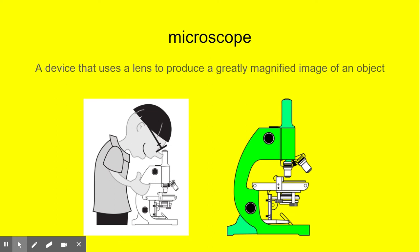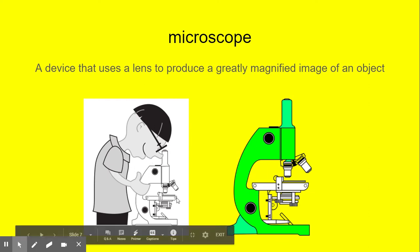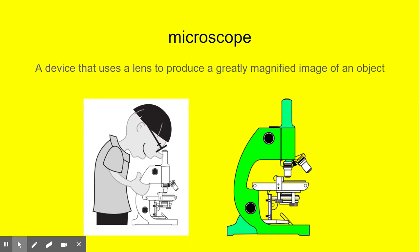Now we have a microscope. We've all seen a microscope. This boy is looking down into a microscope observing a slide. A microscope is a device that uses a lens to produce a greatly magnified image of an object. When we put a slide under a microscope, boys and girls, we're looking at it bigger, up close, magnifying it. Good job.